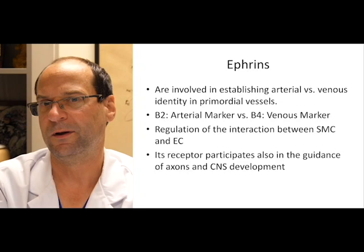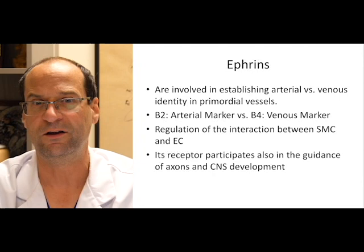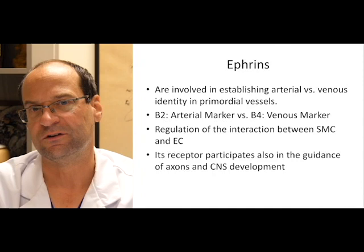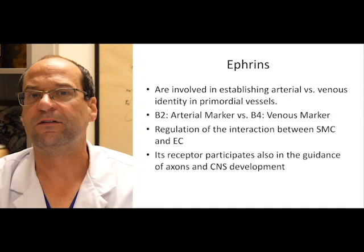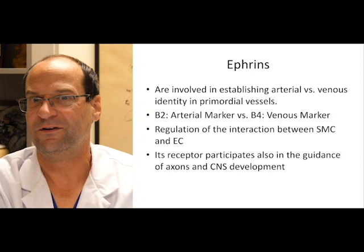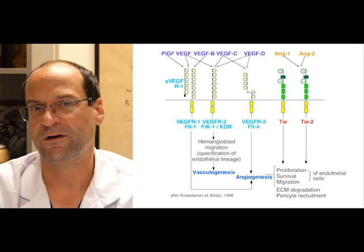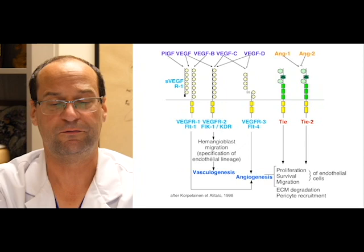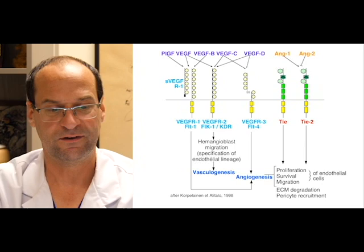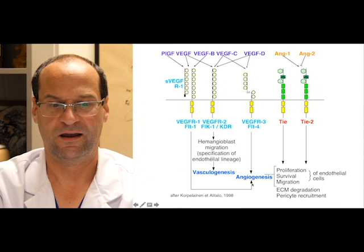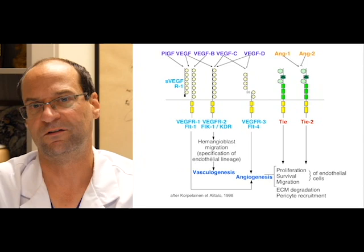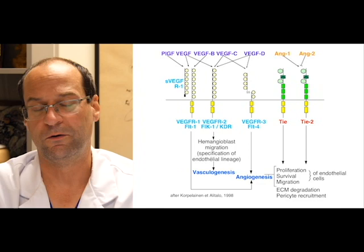We all know that DVAs can be associated with focal cortical dysplasias, and AVMs can be associated with polymicrogyria. This interaction is guided through ephrins, indicating that blood vessel development is not only interacting with the blood vessel itself but is actually also interacting with the adjacent brain. This slide here summarizes what we have learned so far about growth factors: VEGF, angiopoietins, and ephrins are responsible for vasculogenesis, angiogenesis, and — as discussed — for the interaction with the remainder of the brain and for making the identity of a blood vessel.